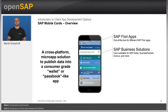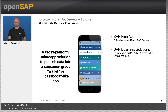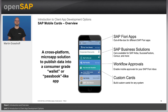Mobile Cards also integrates very easily into other existing SAP business applications like Ariba, SuccessFactors, Concur, and more. It allows you to run workflow approvals — for each leave request you would get a card, and then you can reject or accept that leave request directly from within the application. The most interesting feature is that you can build custom cards, which is also what we will do in the course later on. For the Chinese market, we also provide WeChat support for mobile cards.